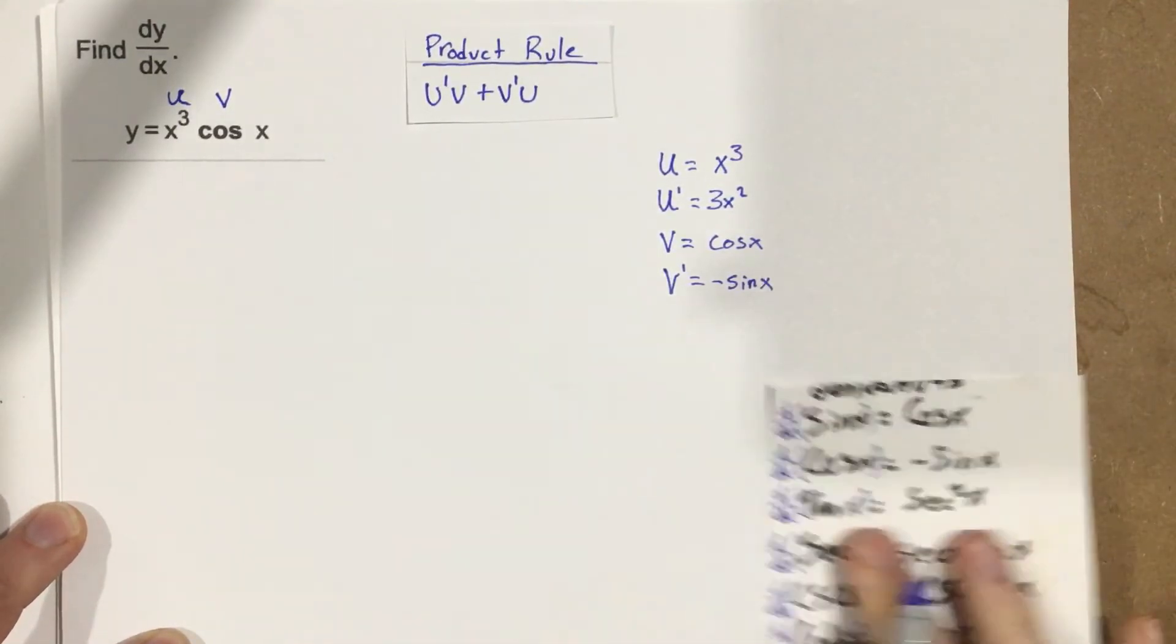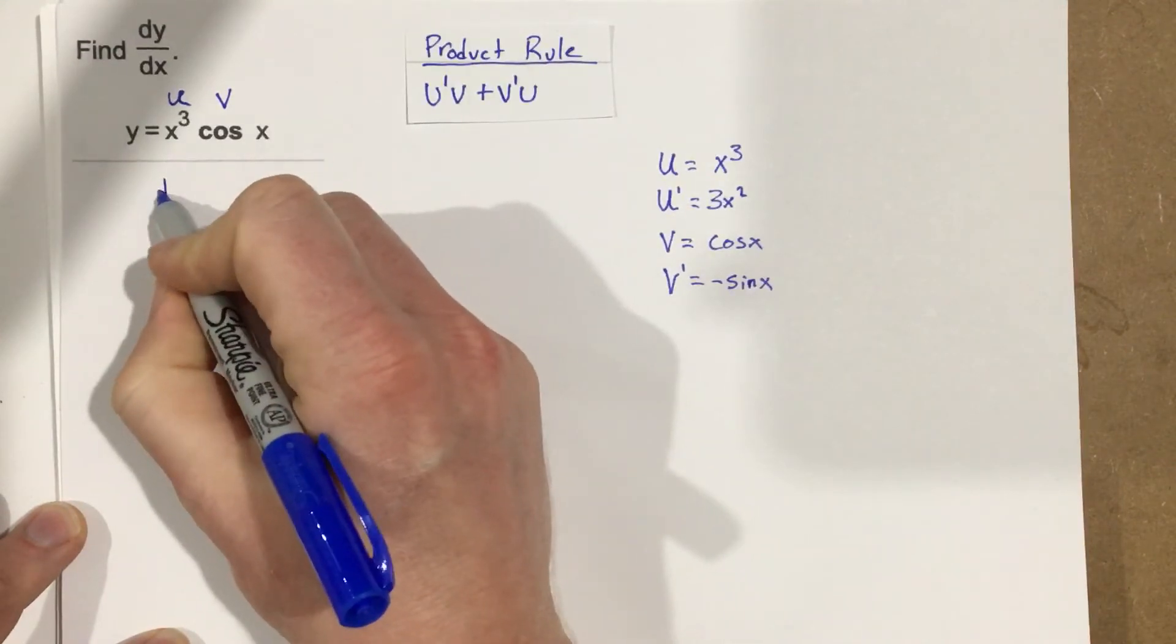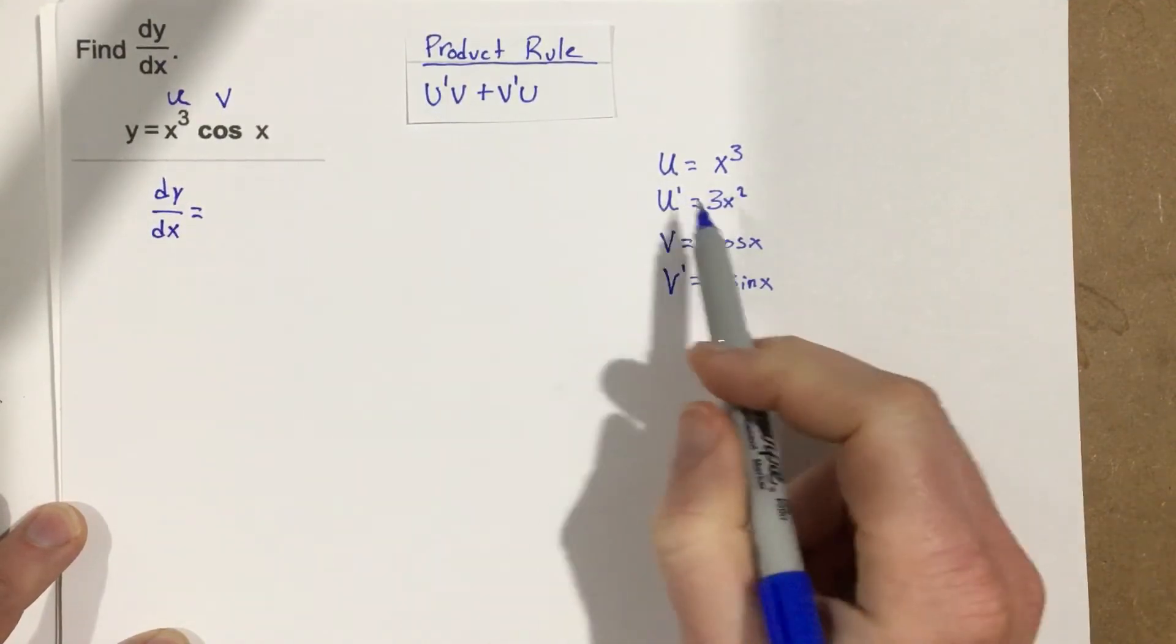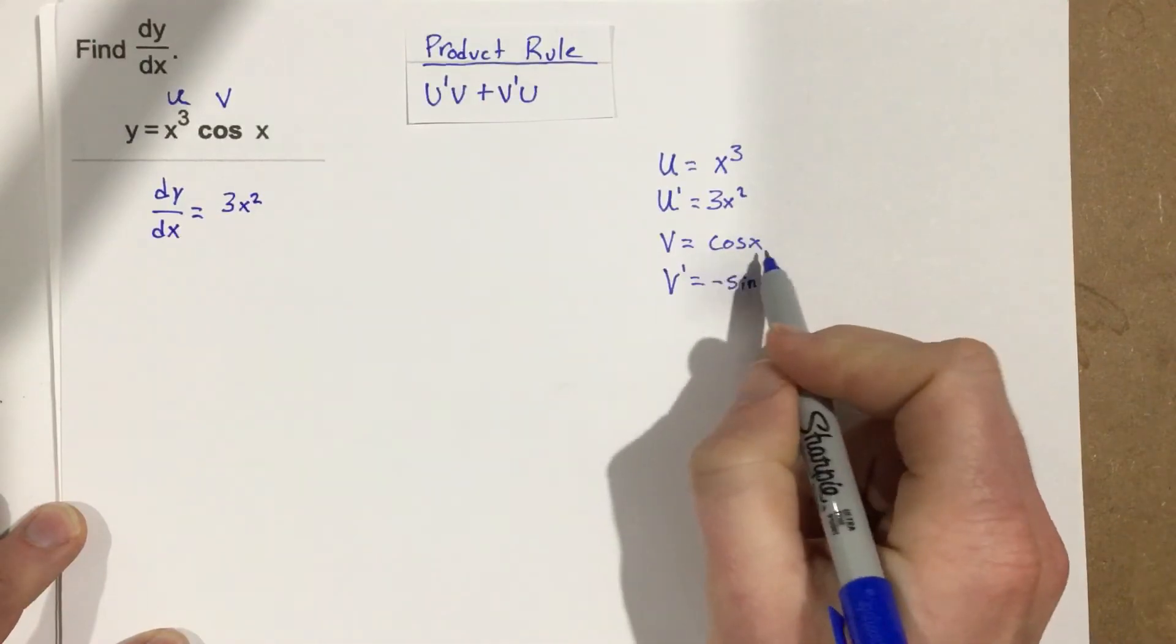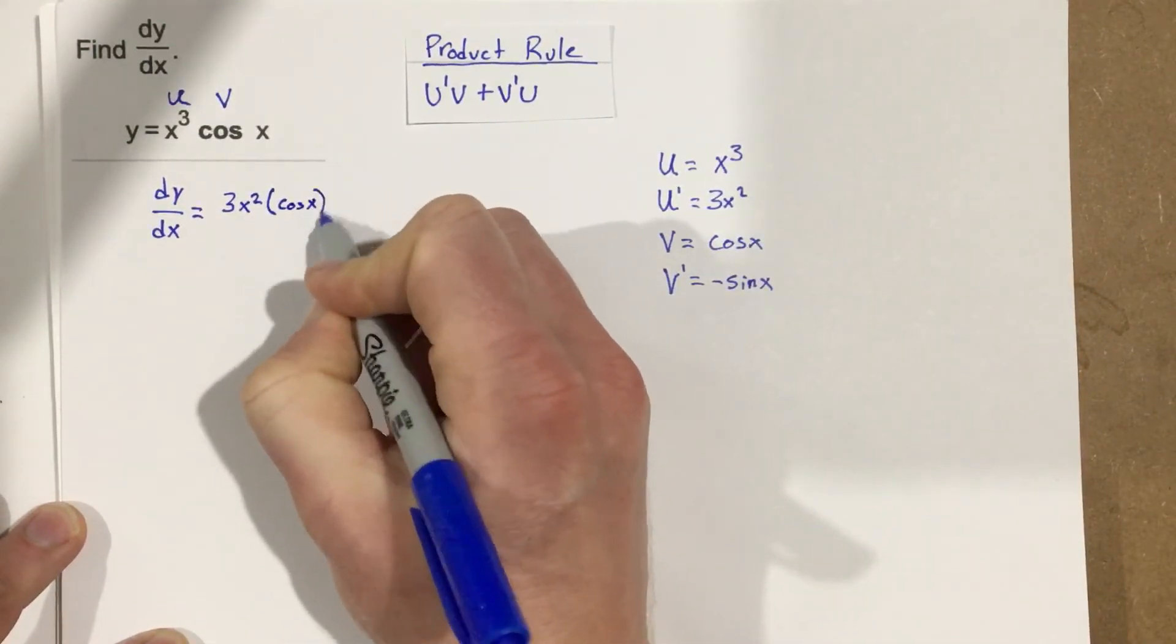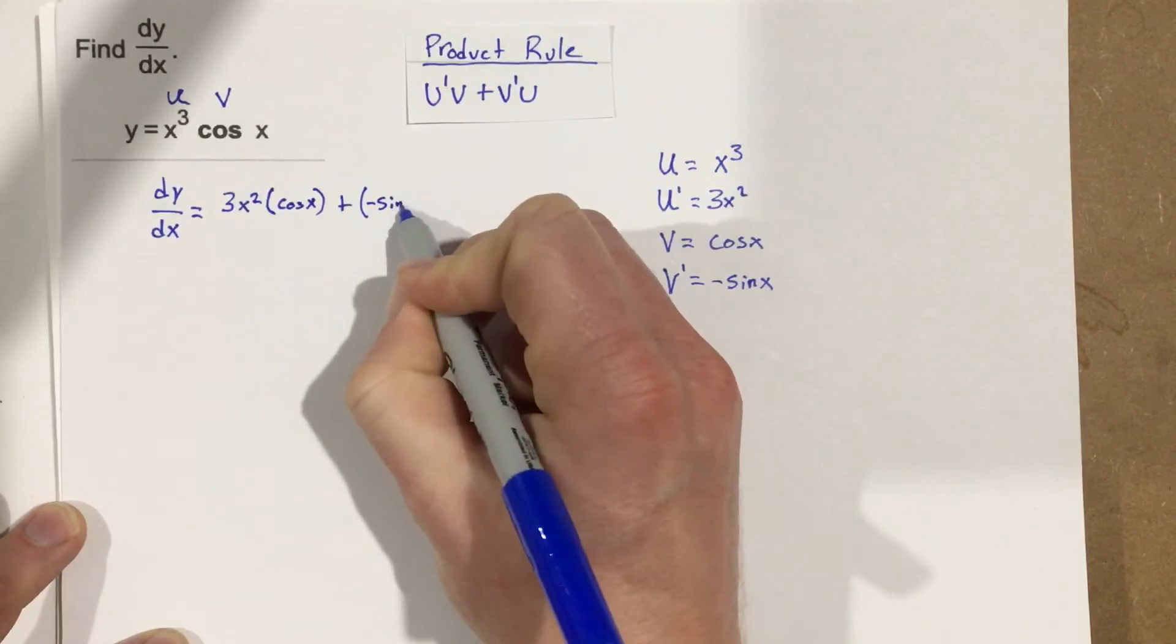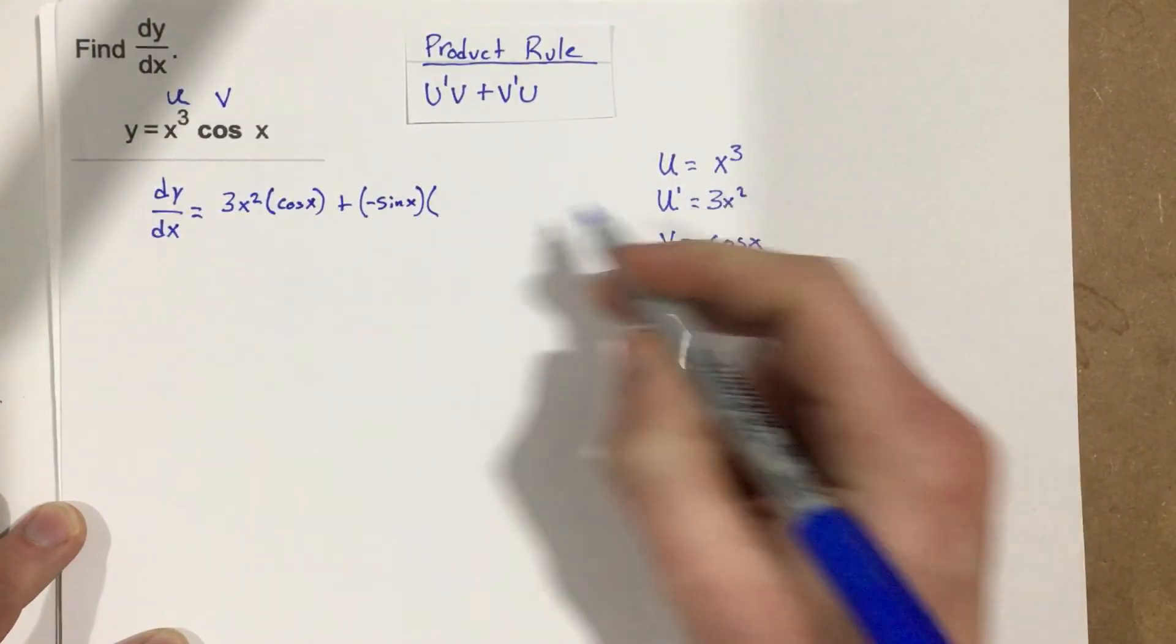Now once I've taken the derivative there, I can go ahead and start to apply it using the product rule. So dy over dx is going to equal u prime times v, so u prime is 3x squared, times v which is cosine x, plus v prime times u which is x cubed.